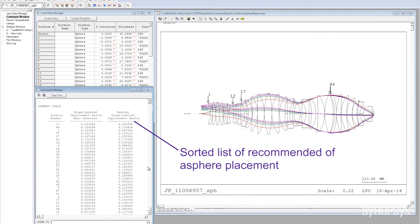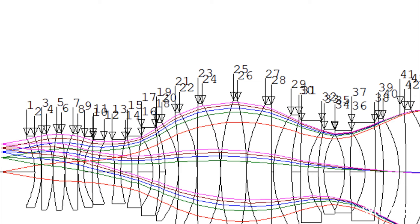It will re-optimize the system and then it will continue that process until it's added as many aspheres as you've asked it to do. So it's really a very simple process for the designer, and the other advantage is it's very fast.